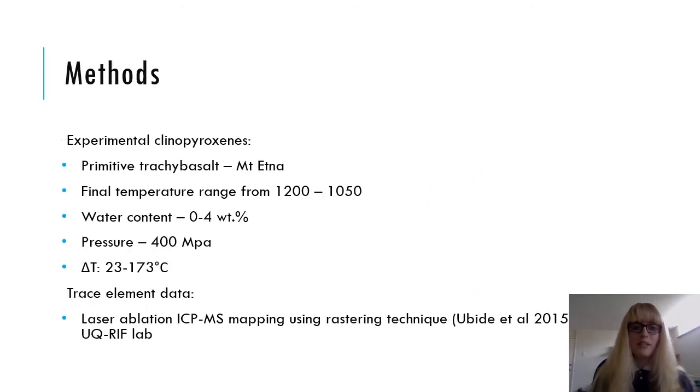So this is where my work comes in. My goals are to investigate how trace element partitioning between sector zoned clinopyroxene crystals changes as a function of undercooling. So to do this, I've analysed an array of experimental clinopyroxenes produced at a range of undercooling conditions, between 23 and 173 degrees of undercooling. These samples were produced by my collaborators in Rome, Italy. To obtain trace element data, I made trace element maps using laser ablation ICP-MS mapping at the UQRIF lab.